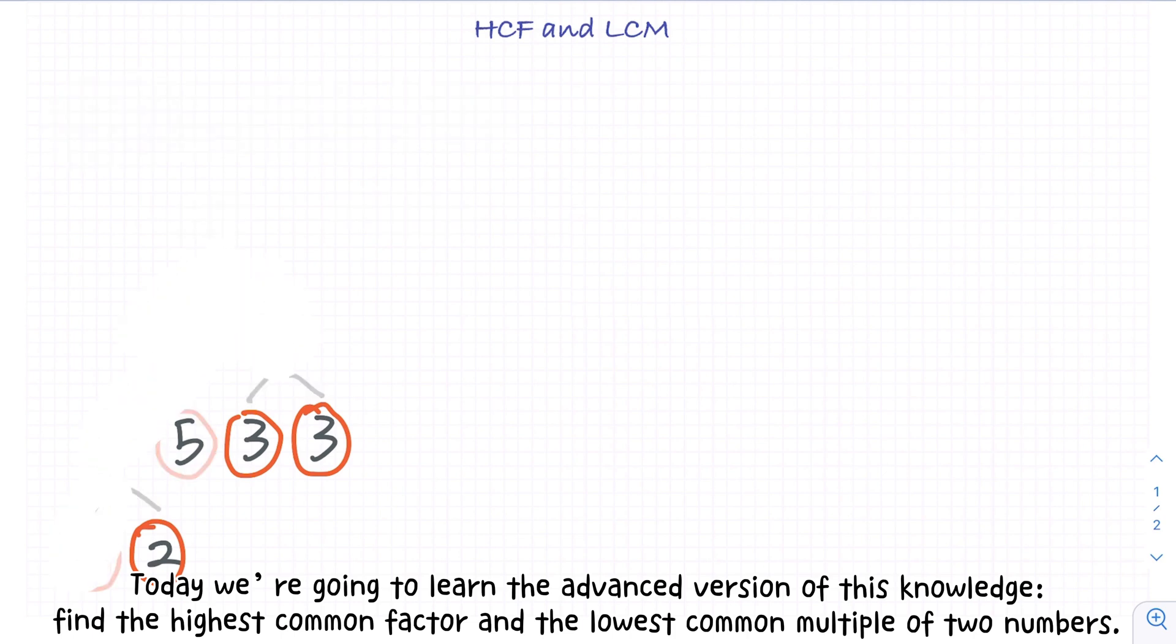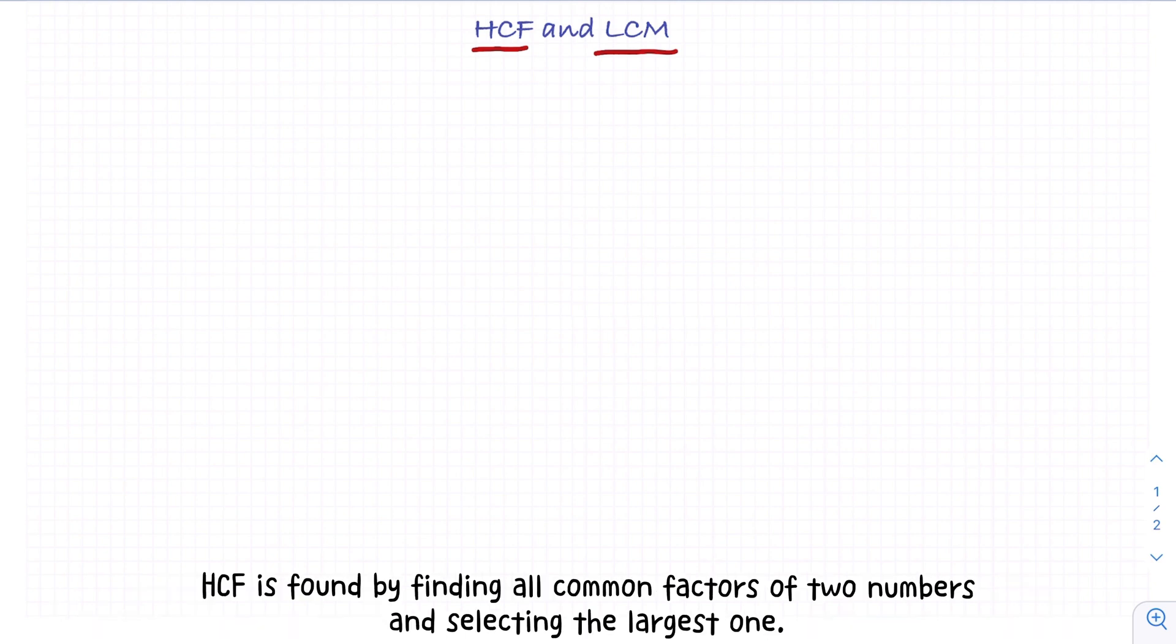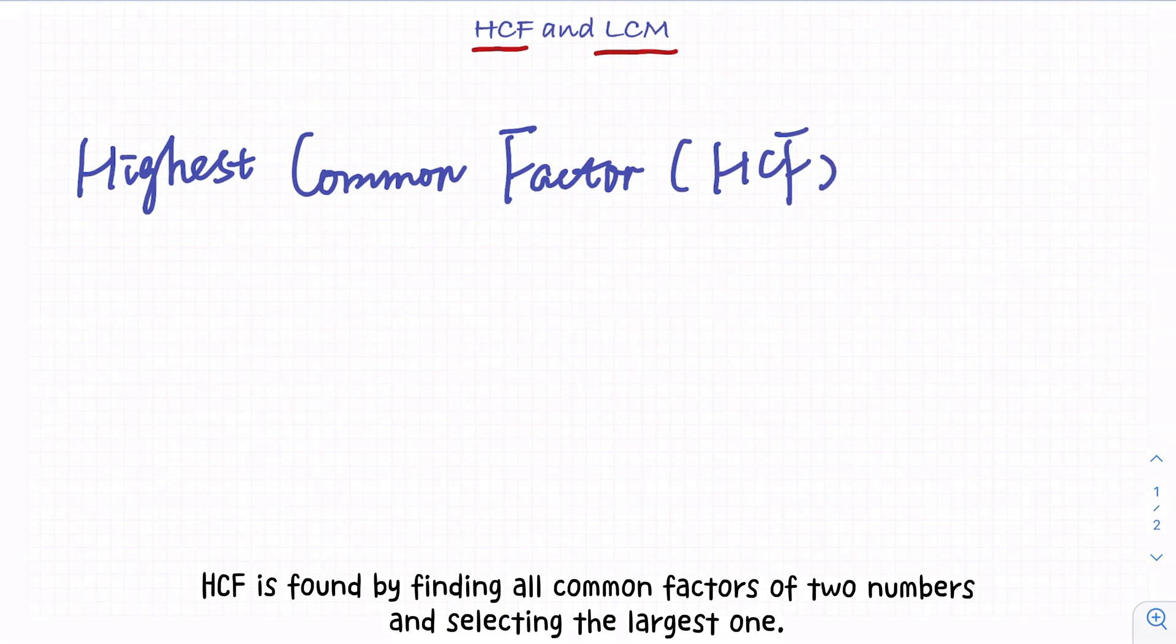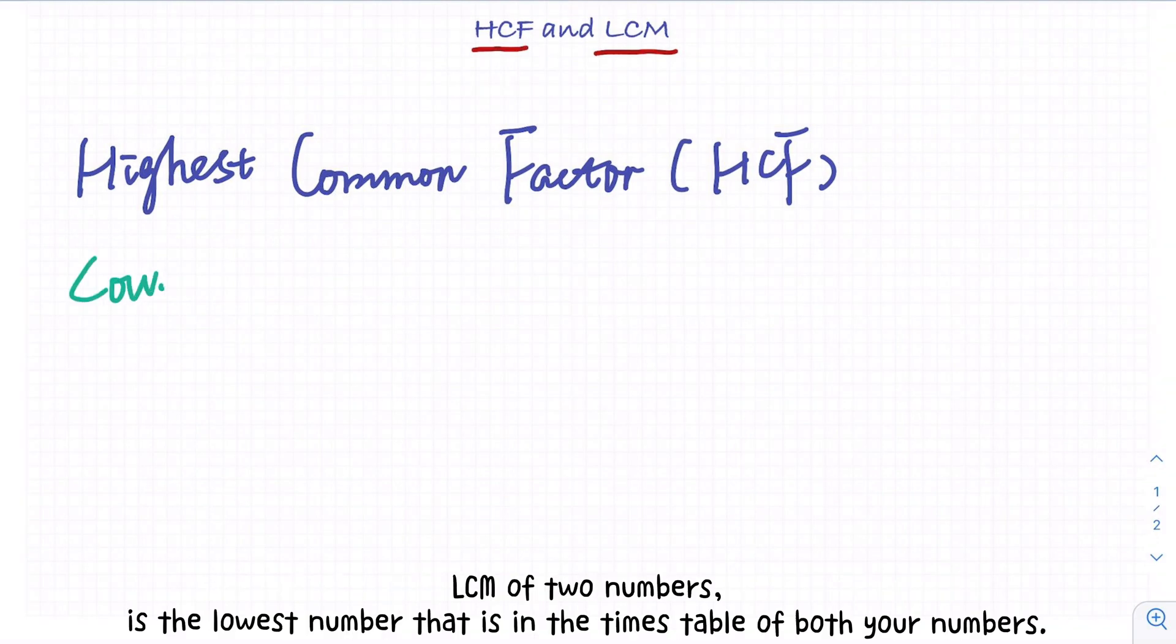Today we're going to learn the advanced version of this knowledge: find the highest common factor and the lowest common multiple of two numbers. The highest common factor, abbreviated as HCF, is found by finding all common factors of two numbers and selecting the largest one. The lowest common multiple, abbreviated as LCM of two numbers, is the lowest number that is in the times table of both your numbers.